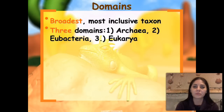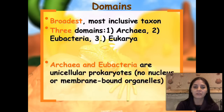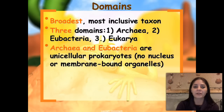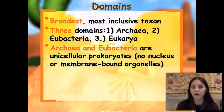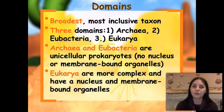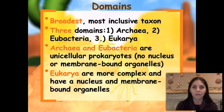There are three domains of living organisms: Archaea, Eubacteria, and Eukarya. Archaea and Eubacteria are unicellular, meaning one cell, prokaryotes. Prokaryotic cells lack a nucleus and also lack membrane-bound organelles. They are smaller than eukaryotic cells. The third domain is Eukarya — these are more complex and have a nucleus as well as membrane-bound organelles.